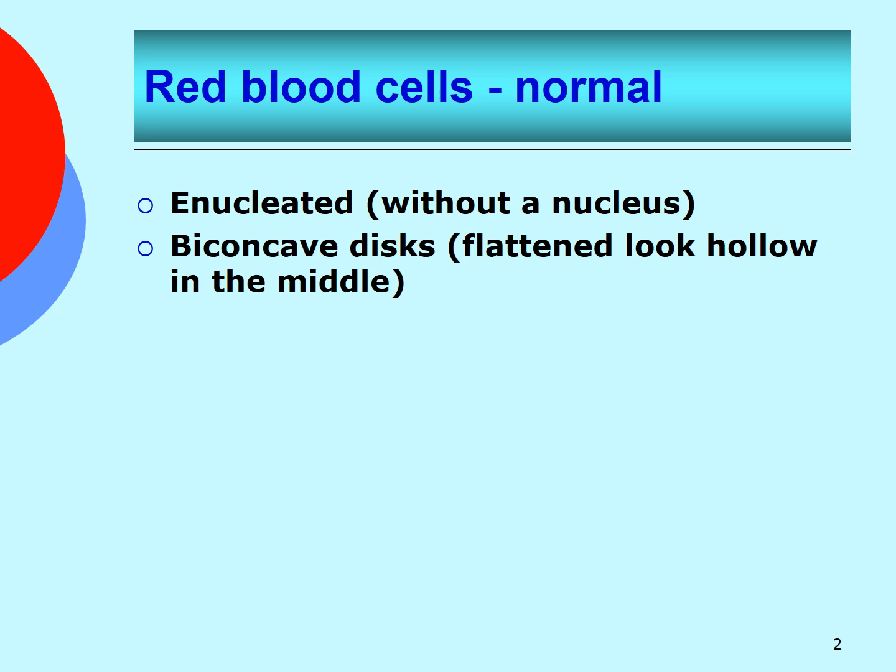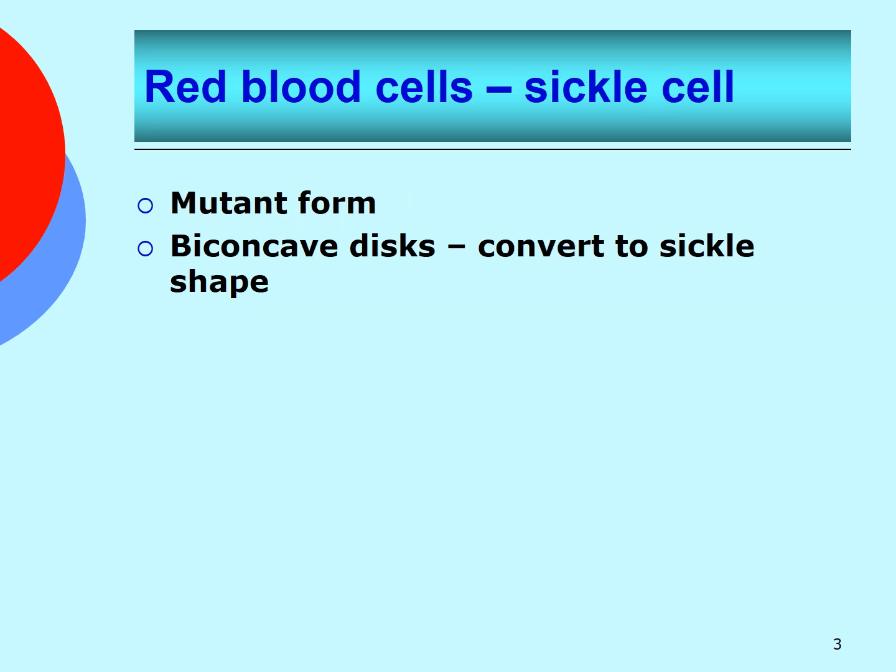Mature red blood cells are enucleated in mammals, meaning they do not contain a nucleus. Red blood cells are the most numerous cells found in a blood sample. In a person with sickle cell disease, the red blood cells can form a mutant or sickled shape under certain conditions.